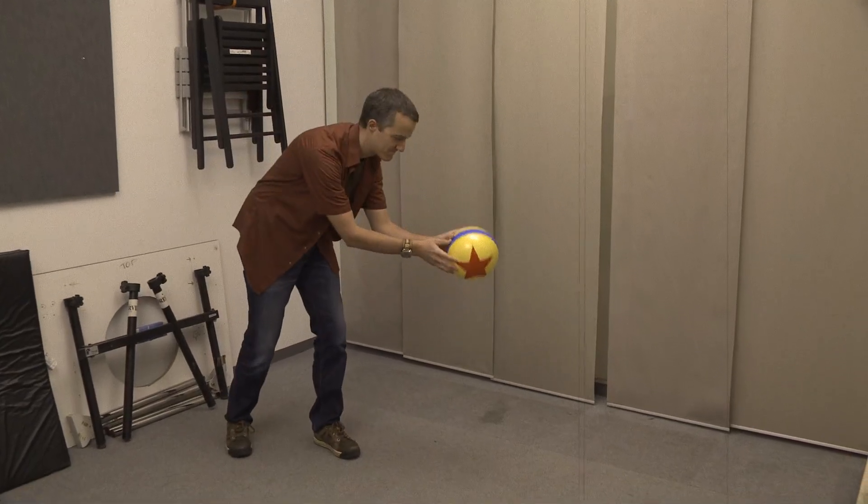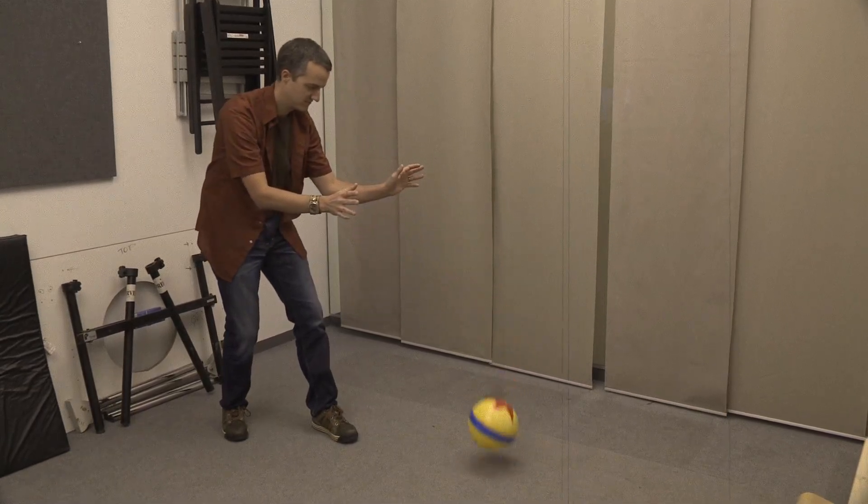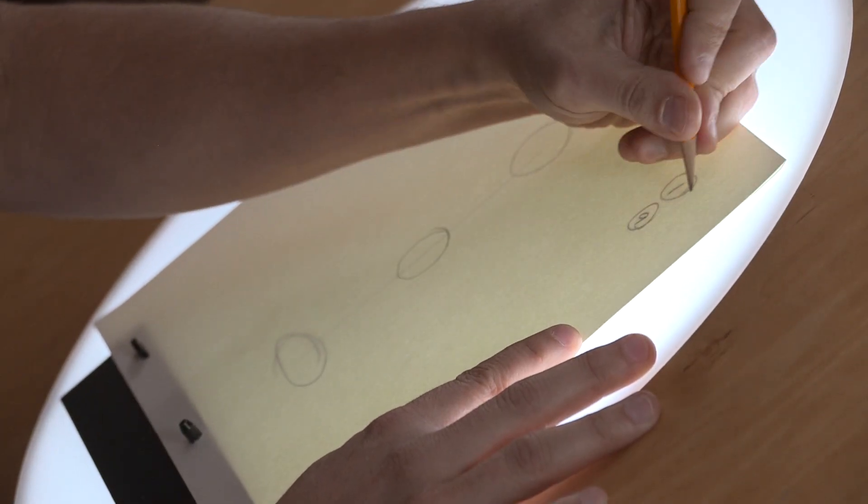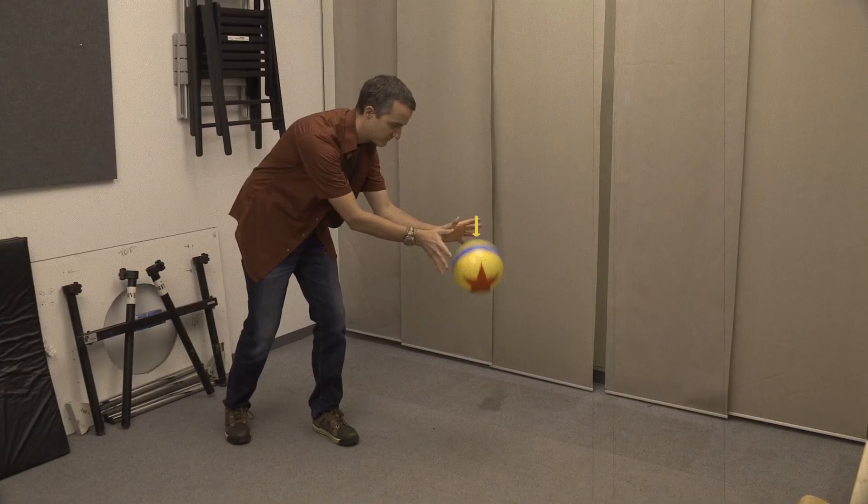Remember, the ball needs to speed up as it falls to the ground. Our frame five is halfway through the animation in time, but the ball shouldn't be halfway to the ground at that point.